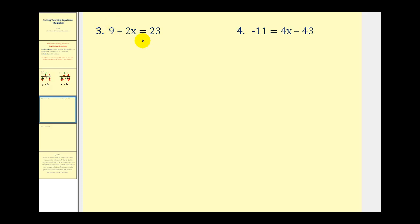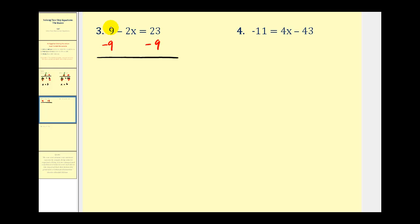Number three sometimes causes some confusion. We have nine minus two x equals twenty-three. This is a positive nine, and then we have minus two times x. So we need to undo this positive nine by adding or subtracting — to undo a positive nine, we're going to have to subtract nine on both sides. We can't add two here because this two is attached by multiplication. So nine minus nine is going to be zero, and here we have twenty-three minus nine, that's going to be fourteen.